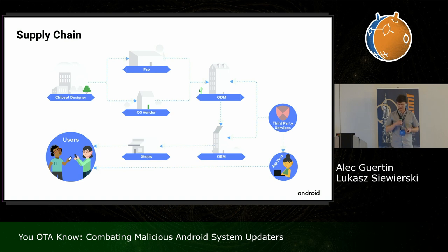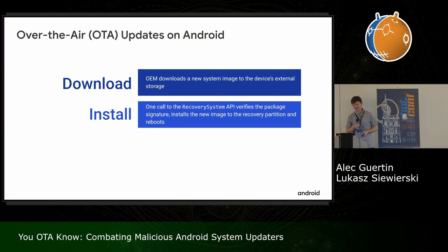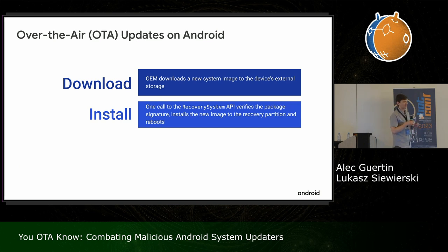OTA just stands for over-the-air updates — basically the system update when a new version of the operating system, new versions of applications, security patches, things like that come in. Probably that button you're always clicking ignore because you don't want to restart your device. On Android, this process is actually pretty straightforward for developers to implement. All it requires is downloading the new system image you want to install on the device, and there is a single API call in the recovery system API that verifies the signature, installs it, and reboots the device. Very straightforward.